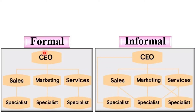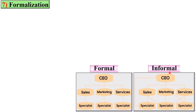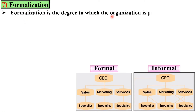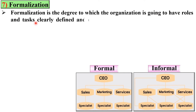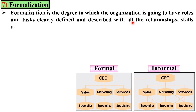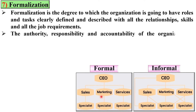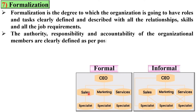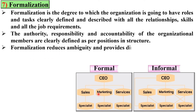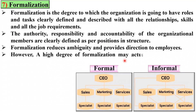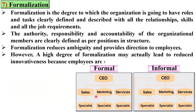Here you can see a formal organization and an informal organization. Formalization is the degree to which the organization has rules and tasks clearly defined, including relationships, skills, and job requirements. The authority, responsibility, and accountability of organizational members are clearly defined as per their position in the structure. Formalization reduces ambiguity and provides direction to employees; however, a high degree of formalization may lead to reduced innovativeness, because employees are used to behaving in a certain manner only.